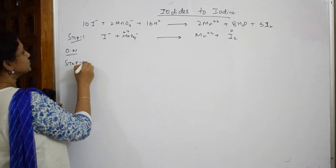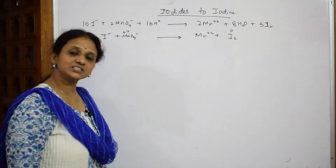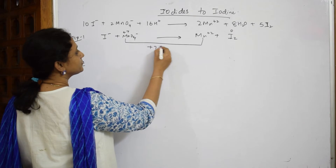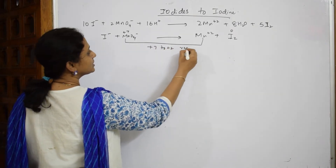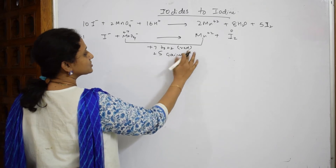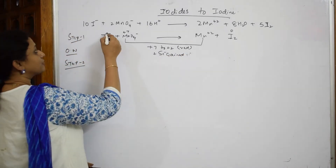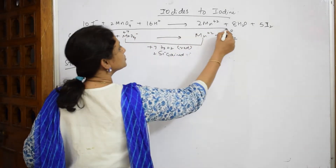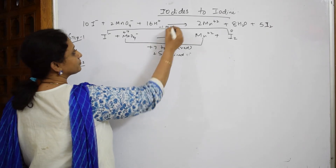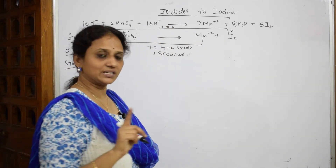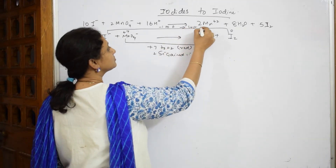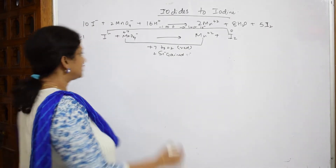In Step 2, identify which species is being oxidized and which is being reduced. Mn goes from +7 to +2 — it undergoes reduction, gaining 5 electrons. Iodine goes from -1 to 0 — it undergoes oxidation, losing one electron per iodine atom. For two iodine atoms, that's two electrons lost.